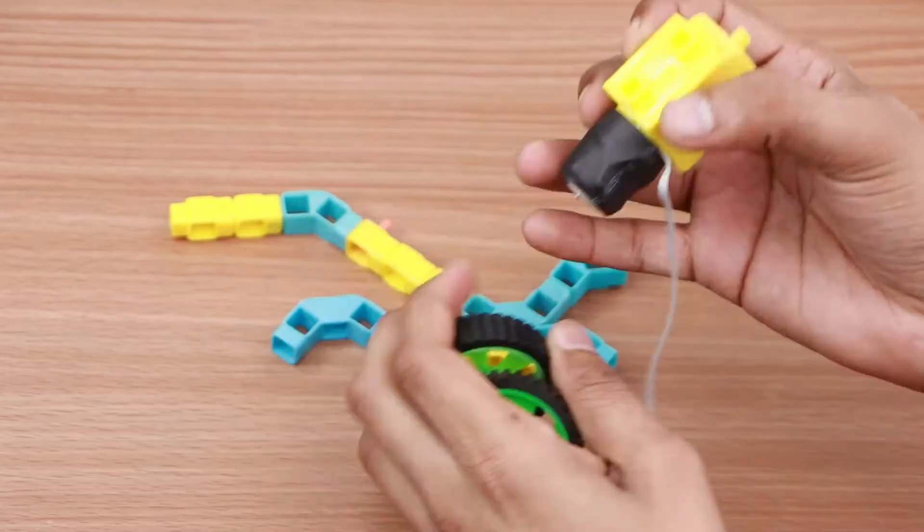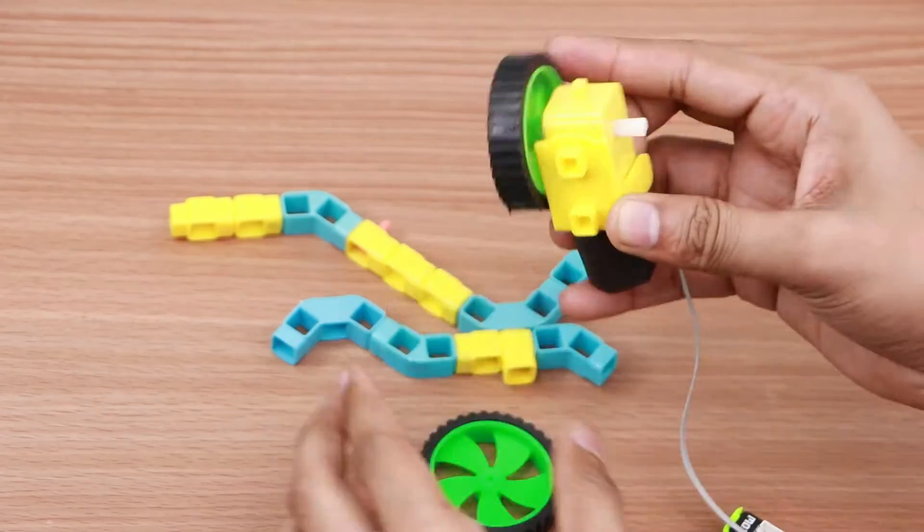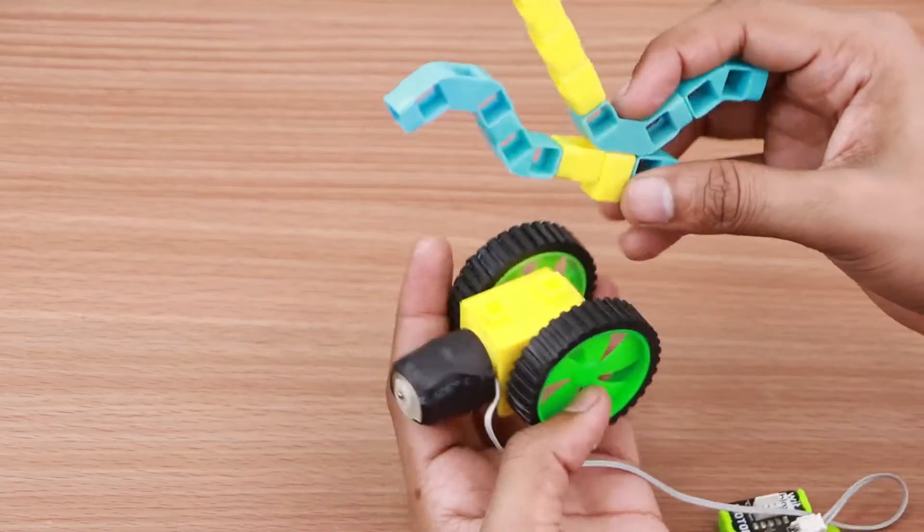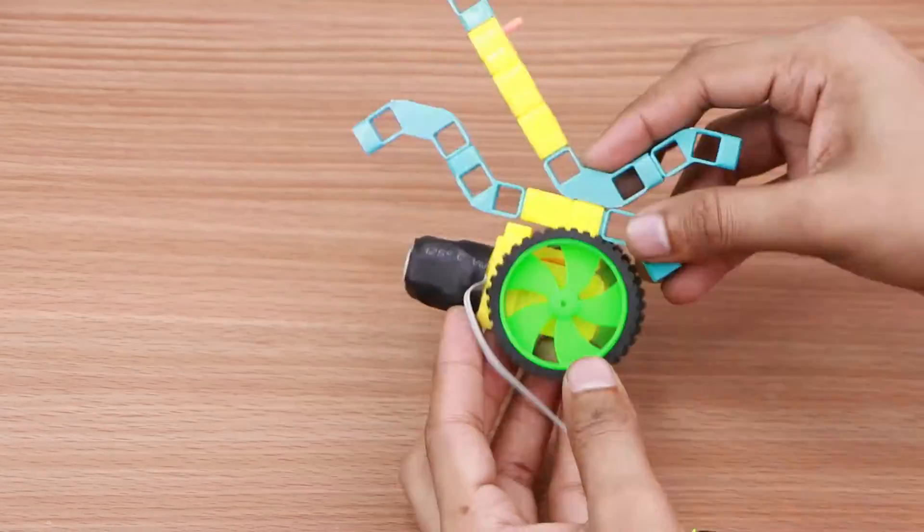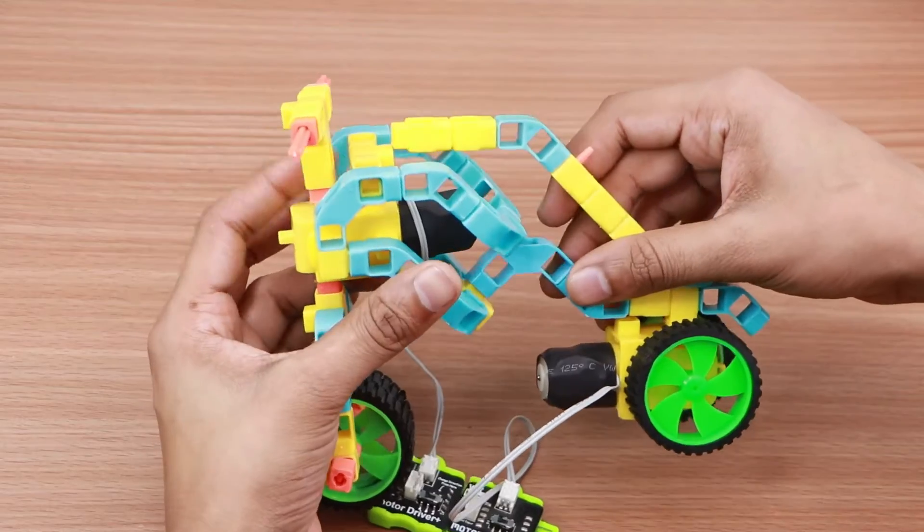Take one motor and attach two wheels to it. Now connect the motor holder to the previous structure as shown. Now connect this to the bike body as shown.